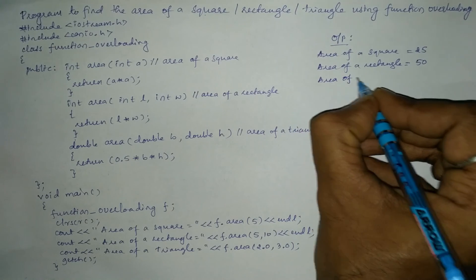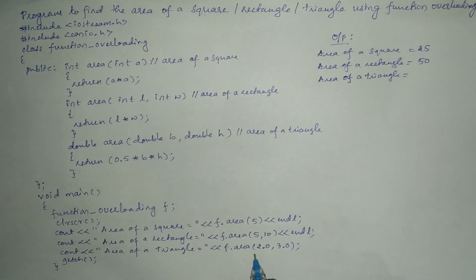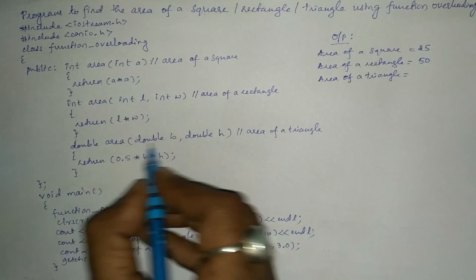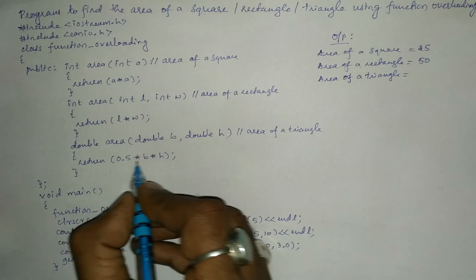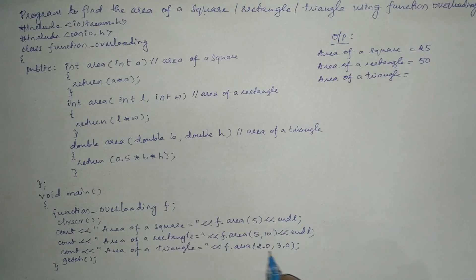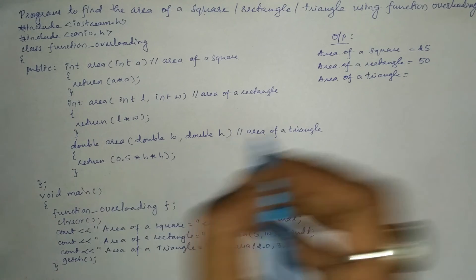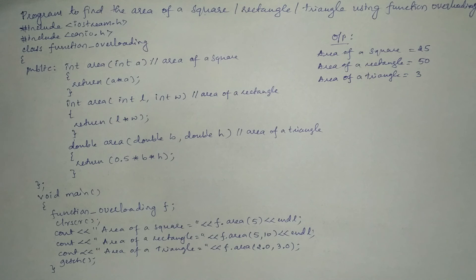Then it executes the next statement: area of a triangle is equal to. With 2.0 and 3.0, the compiler automatically selects the last function — area of a triangle — which returns 0.5*b*h. Here b*h is 2*3 = 6, so half of 6 is 3. It prints 3. Now it is time to go for execution, and I will take you to my laptop screen.